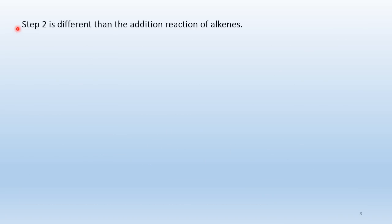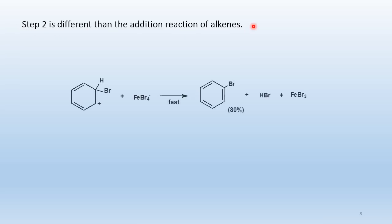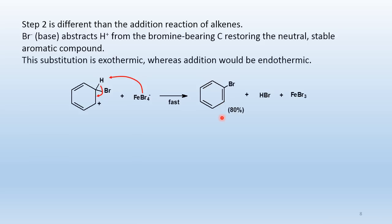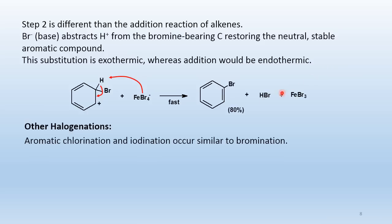The second step of EAS differs from alkene addition. Bromide (FeBr4⁻) abstracts a hydrogen ion from the bromine-bearing carbon, restoring the neutral stable aromatic compound. The pair of electrons fall back and re-establish aromaticity — this second step is exothermic. Addition of bromine to the carbocation instead would destroy aromaticity and would actually be endothermic.